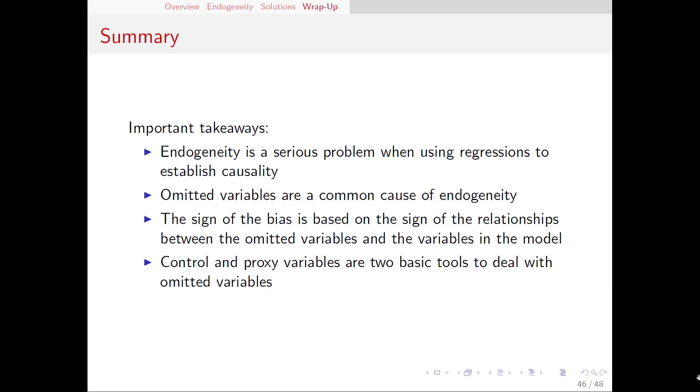Understanding the omitted variable problem is one of the most important things I want you to take away from these lectures. An understanding of regression analysis is not complete without it. In these last few videos, we have covered what the omitted variable problem is, why it causes a problem, and we've thought about what is the sign of the bias that we're going to get. And then we've looked at two different strategies we can use to control endogeneity. Control variables and proxy variables.